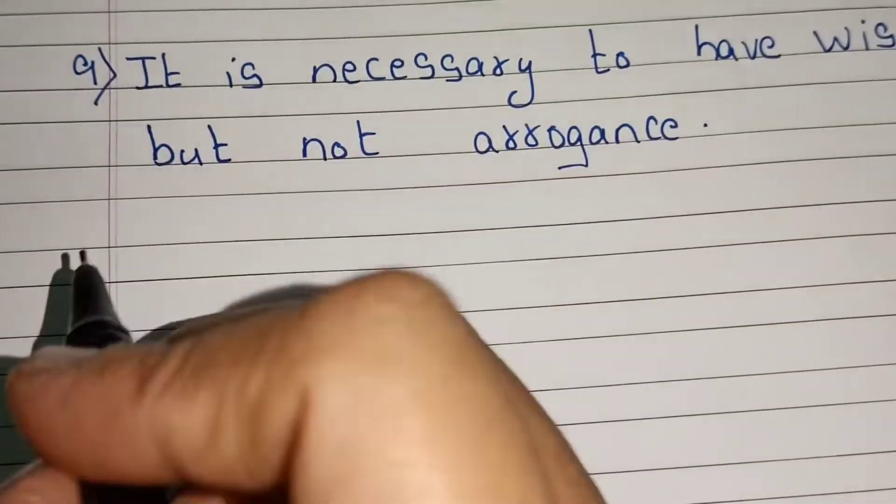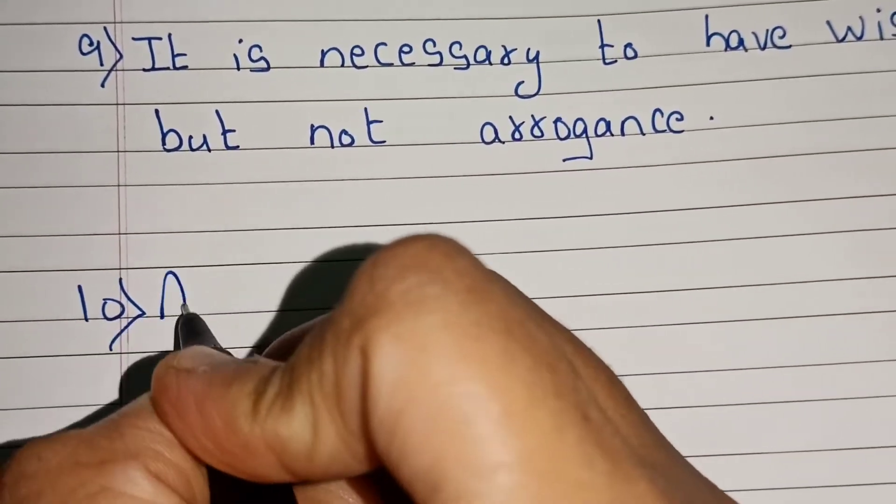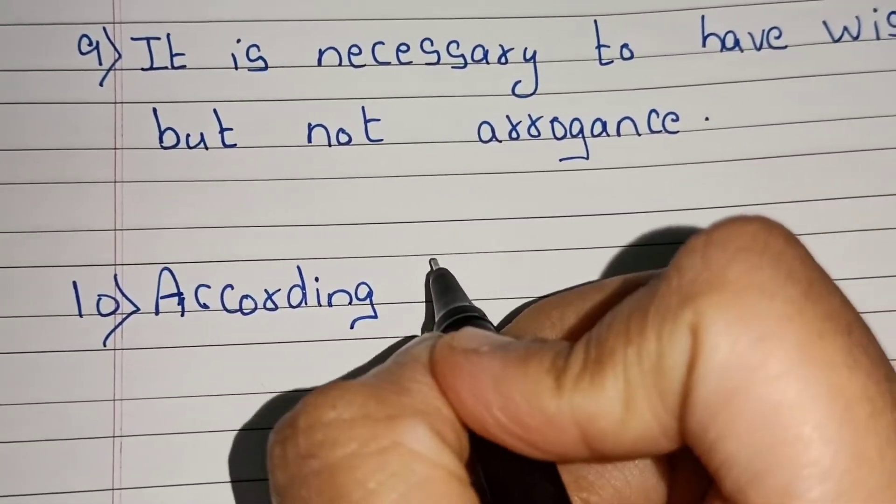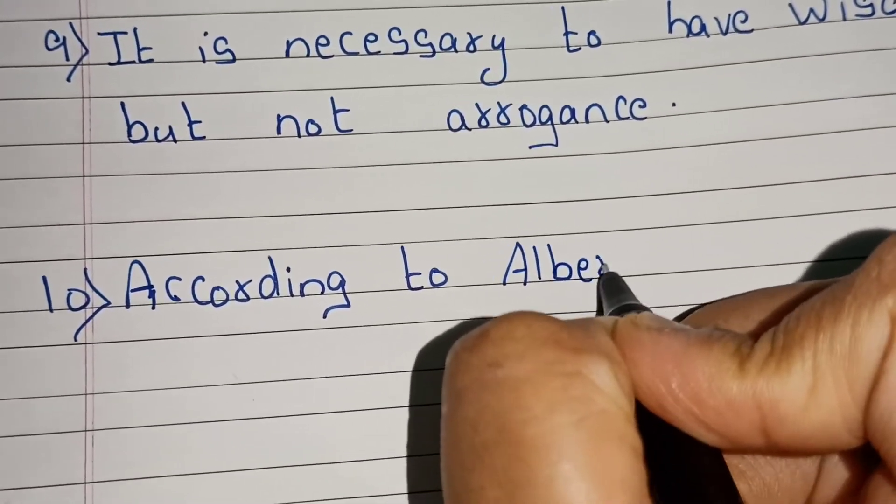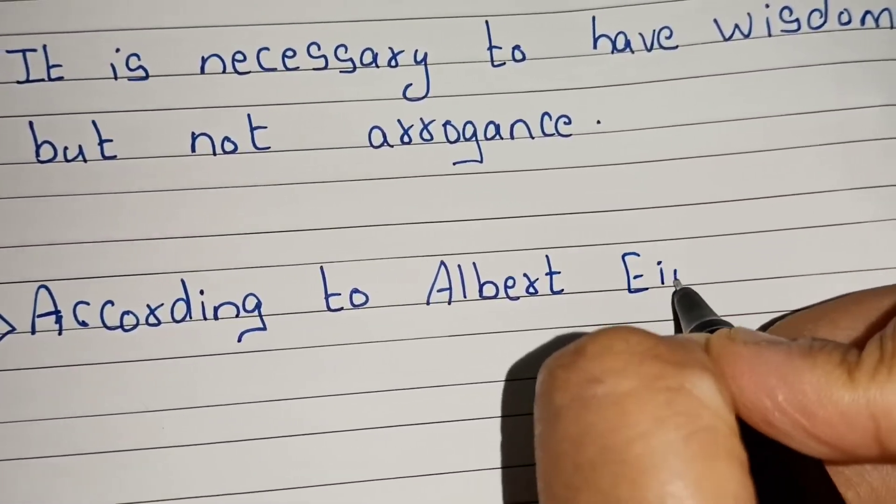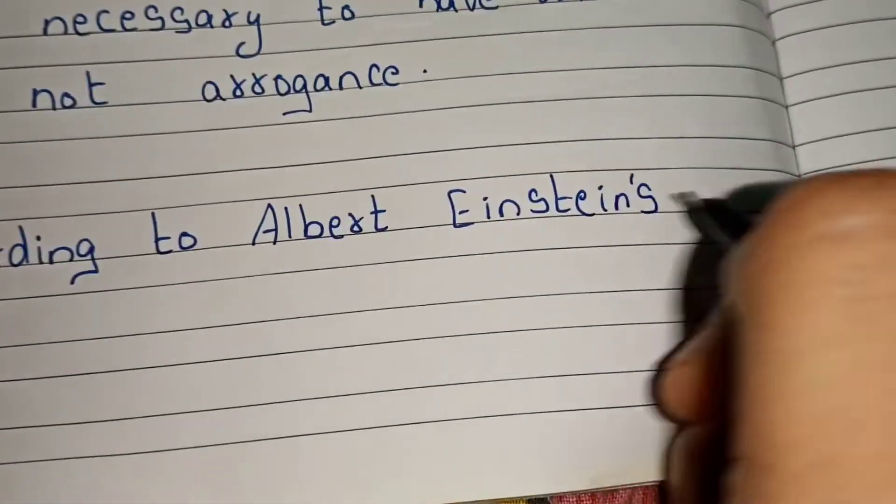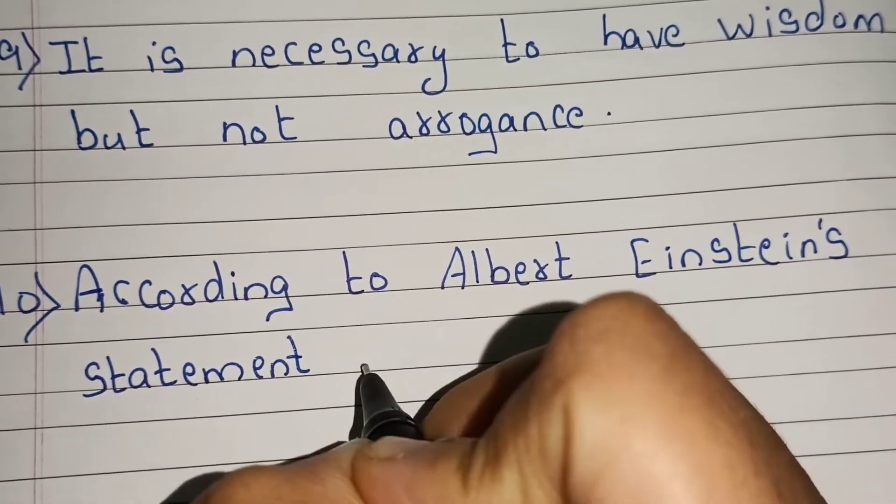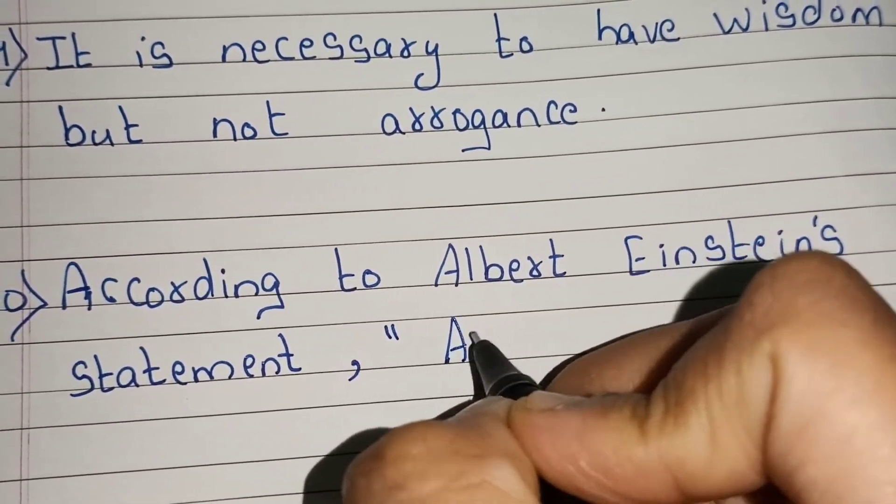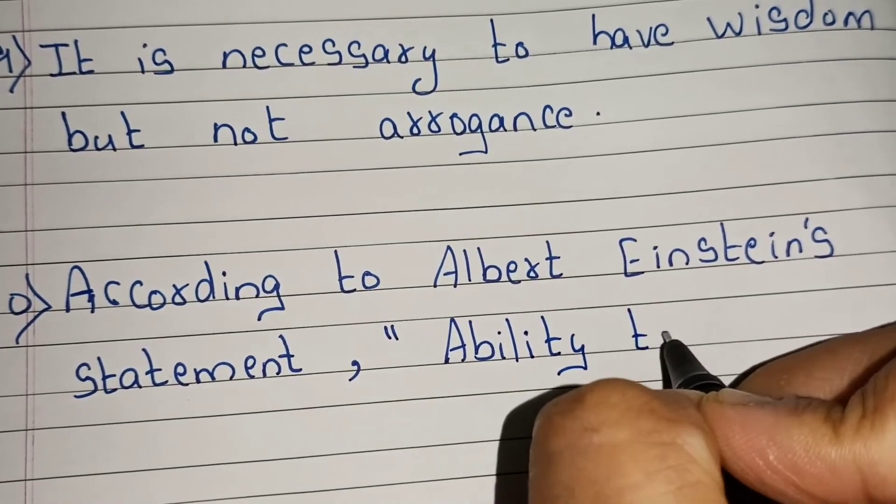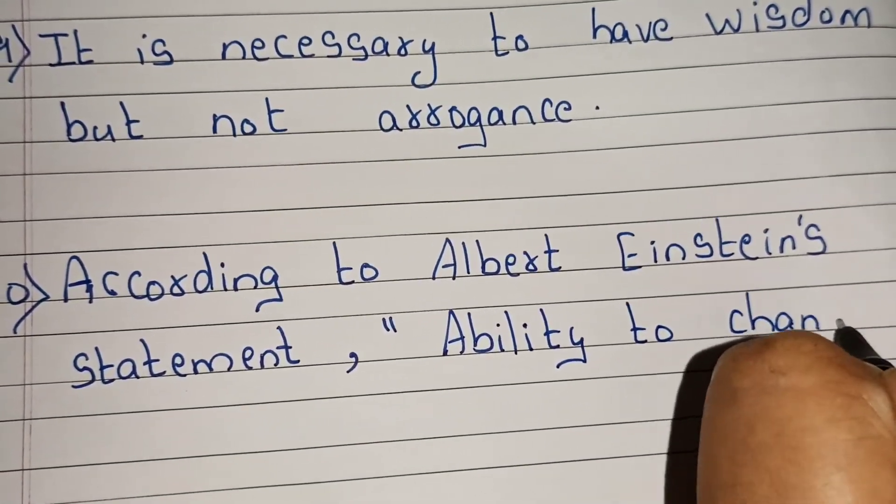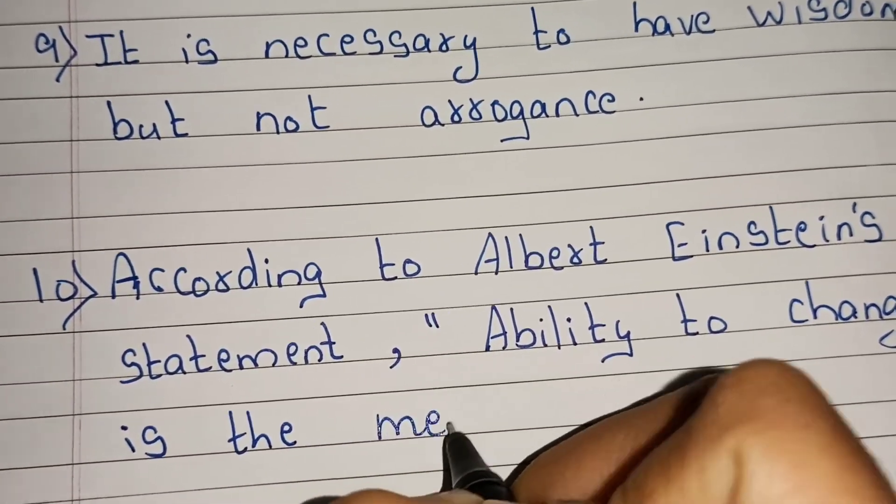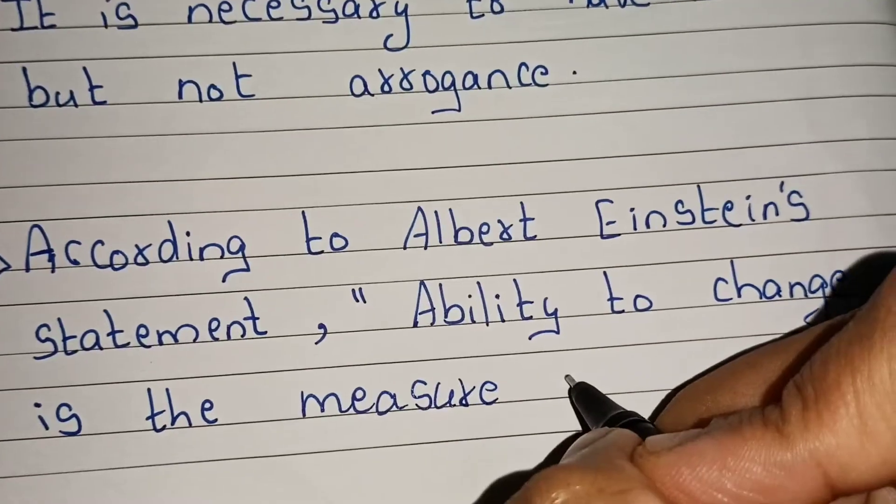Point number ten, last point but not least. According to Albert Einstein's statement, ability to change. Ability to change is the measure of intelligence.